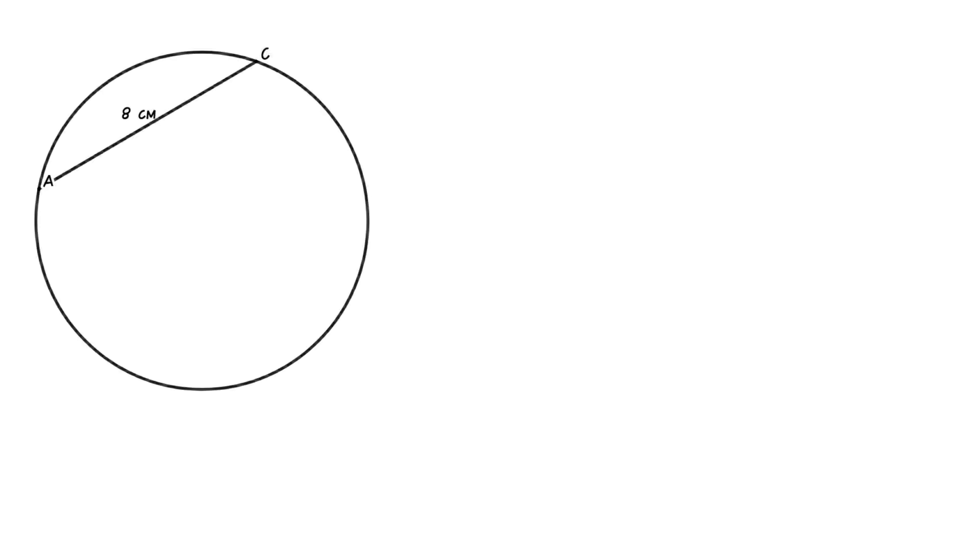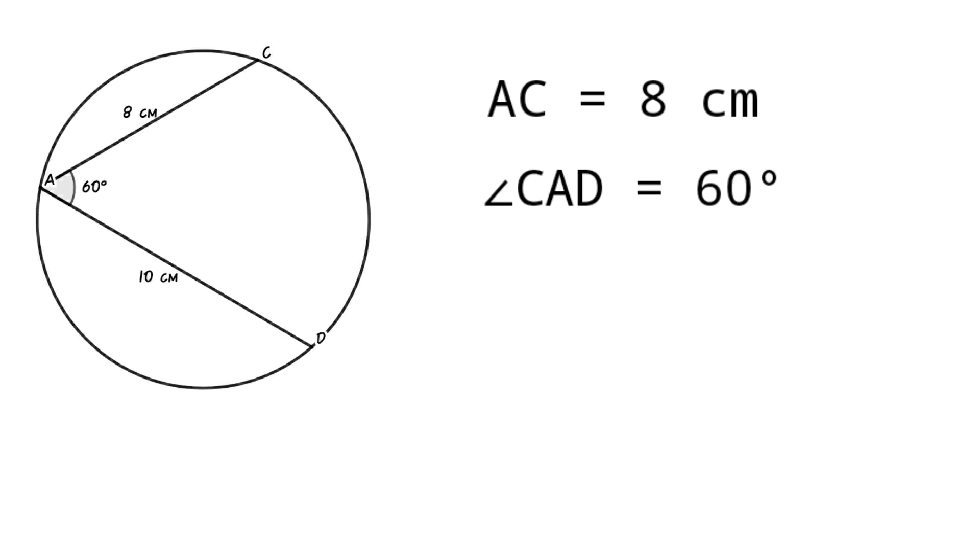In a circle, draw a chord AC with 8 cm length. Measure 60 degrees from AC and draw another chord AD with length measured as 10 cm.